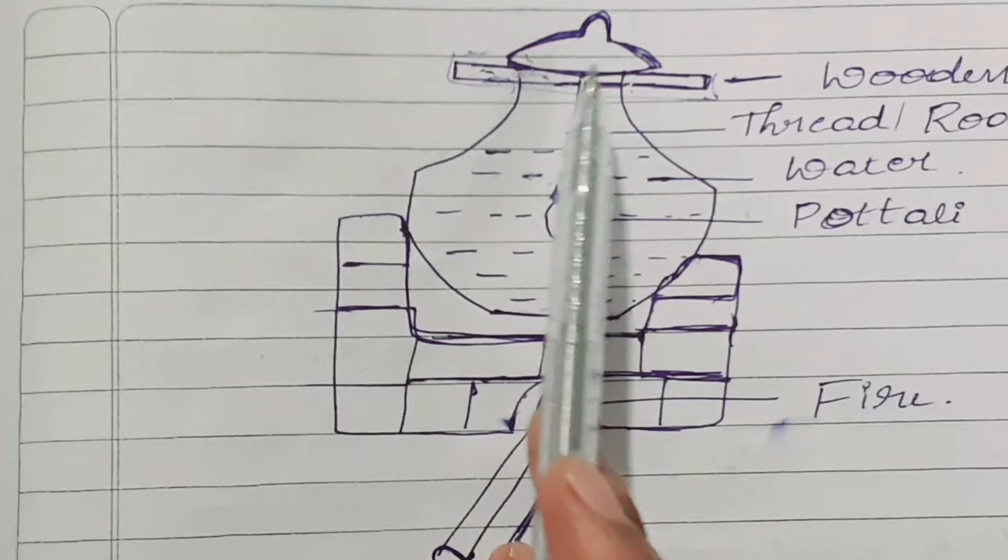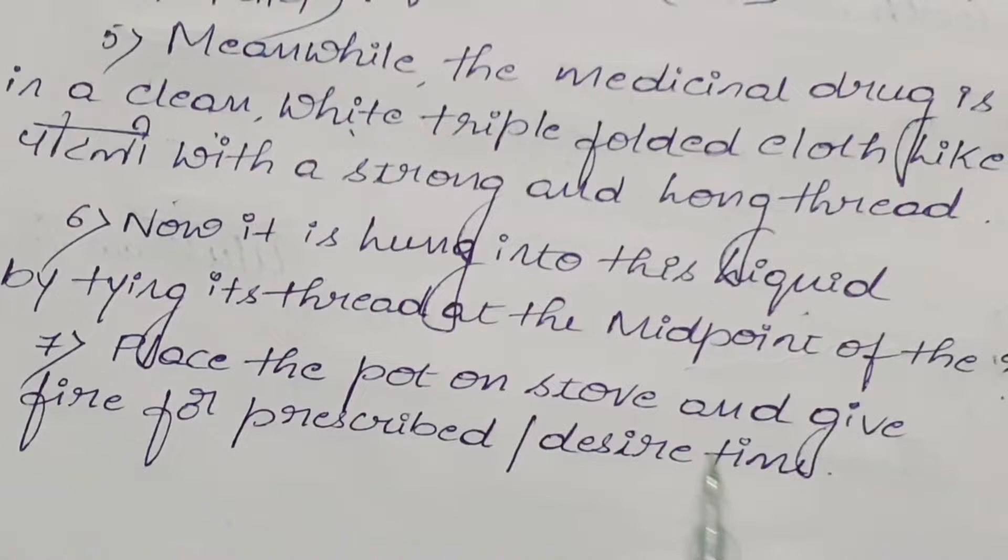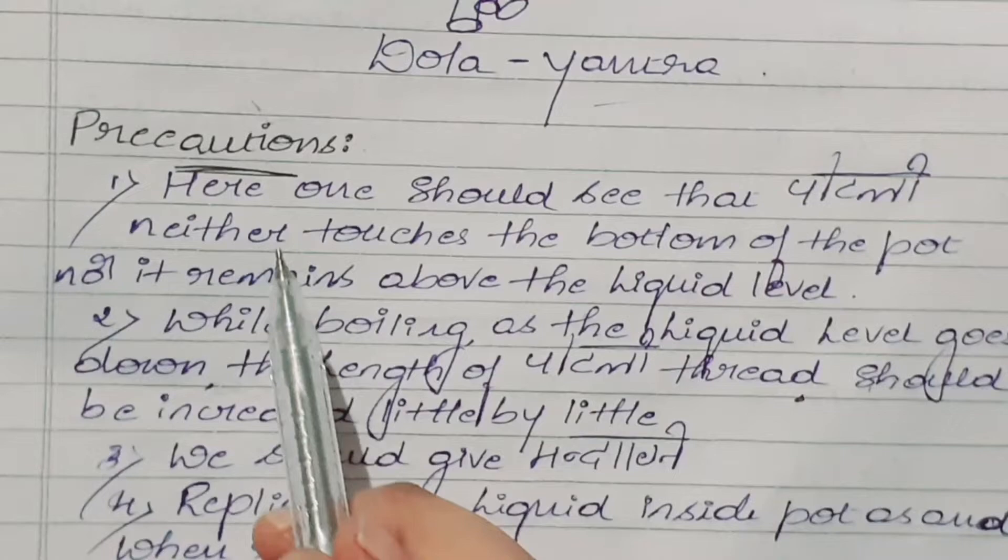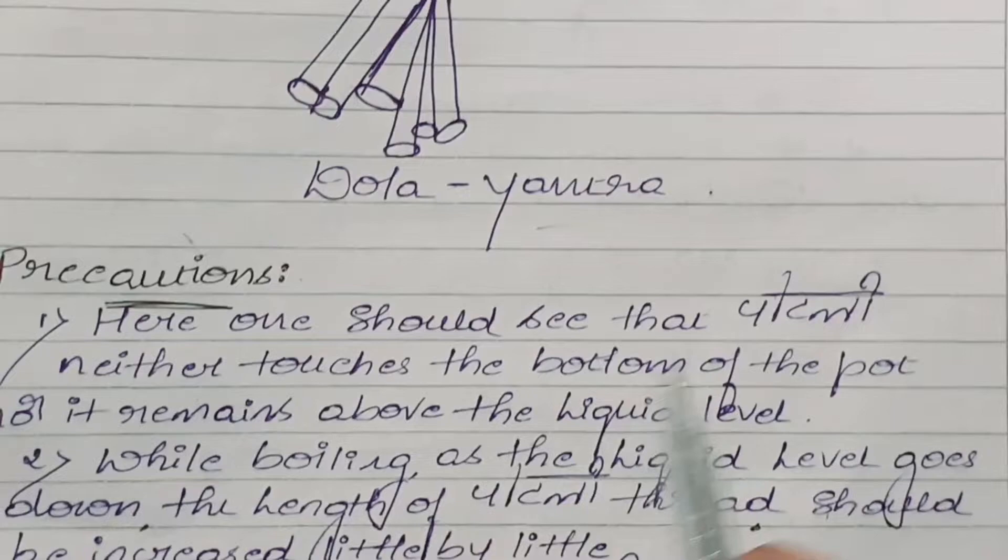The medicinal drug which is tied in a potli is hung at the midpoint of the rod by a long thread. Place the pot on stove and give fire for prescribed or desired time, then it is placed in the chulika and given fire for prescribed time.